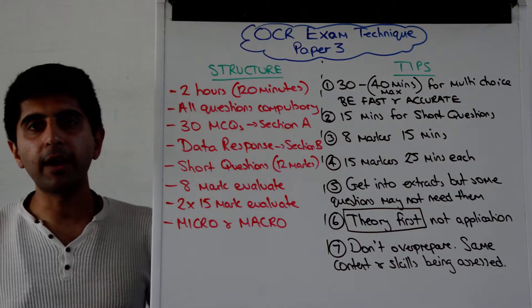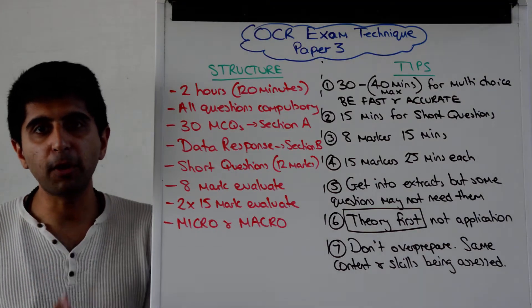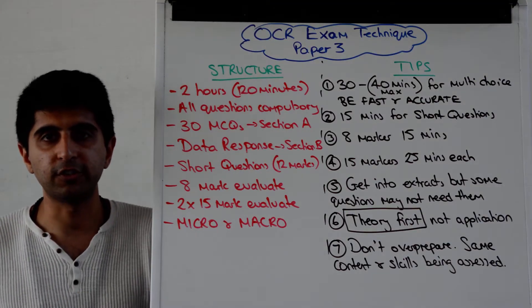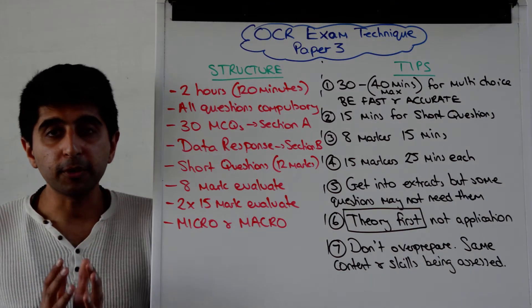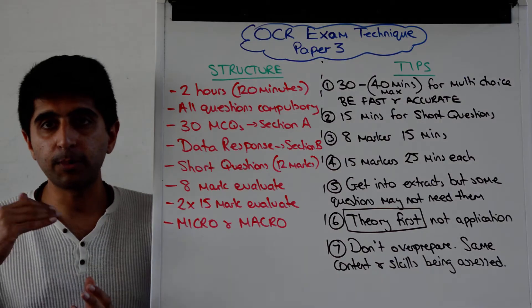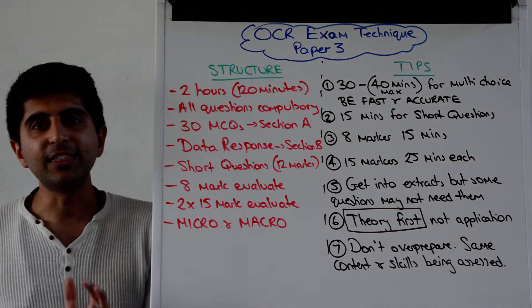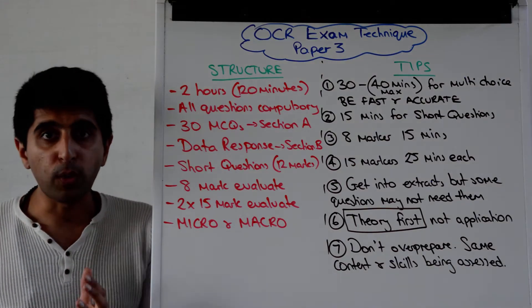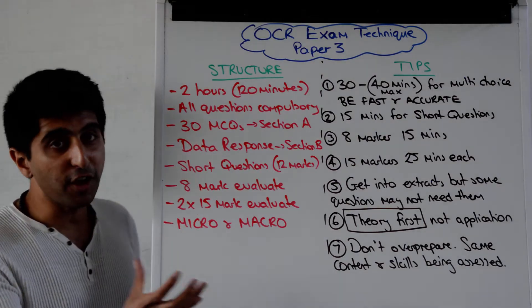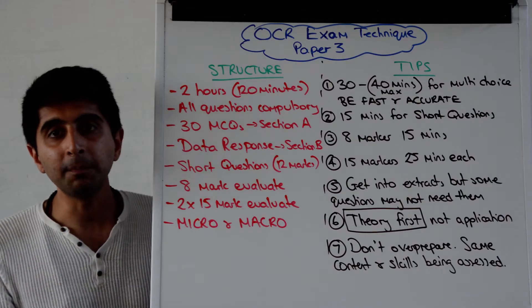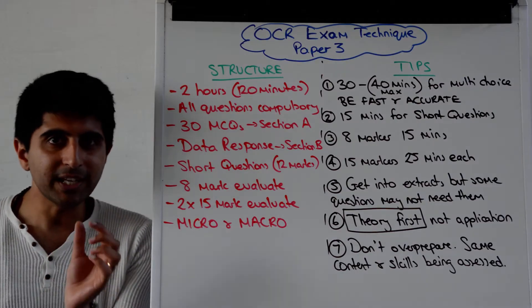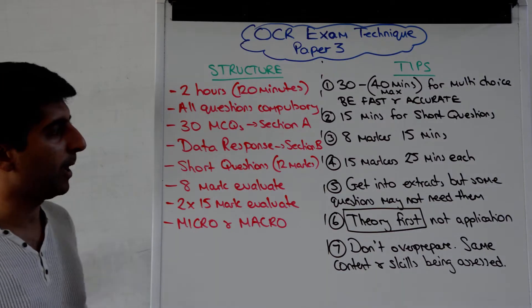Section A is going to comprise 30 multiple choice questions. Those multiple choice questions can be micro and macro. The key thing on those is to be quick, and you're going to have 30 of those to do — right at the start of your paper 3.